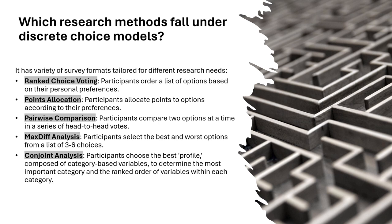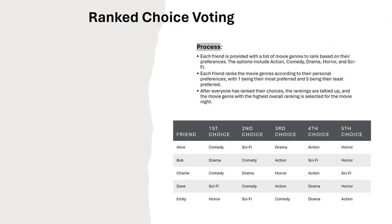These are various survey formats tailored to different research needs. One is rank choice voting, where participants order a list of options based on their personal preferences. Another is point allocation, where participants allocate points to options according to their preferences. Then pairwise comparison, where participants compare two options at a time. Max diff analysis, where participants select the best and worst options from a list of three to six choices. There is also conjoint analysis, where participants select the best profile composed of category-based variables to determine the most important category and the ranked order of variables within each category.